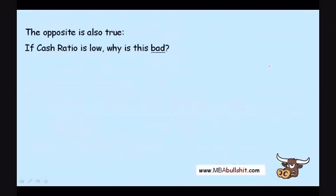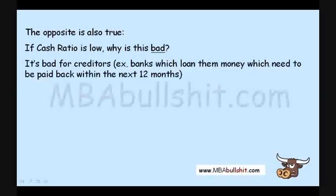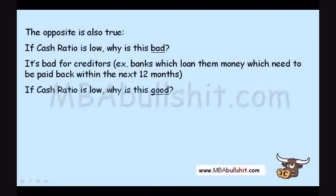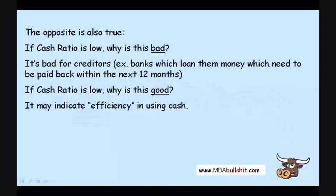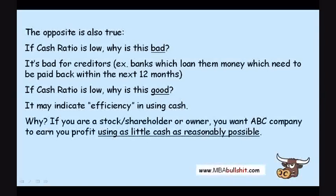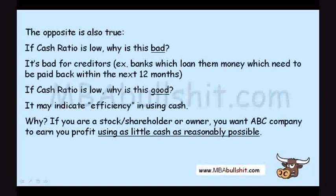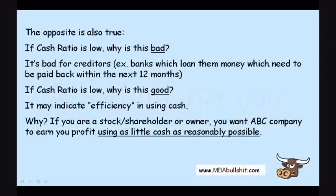The opposite is also true. If the cash ratio is low, this could be bad for creditors — banks that loaned money may not get paid back within the next 12 months. But if the cash ratio is low, why is this good? It could indicate efficiency in using cash, because if you're a stockholder you want ABC Company to earn profit using as little cash as reasonably possible. Or maybe the company is growing so fast that every time it has extra cash inflow, it uses it to set up more branches due to strong demand. So a low cash ratio could indicate quick, good growth.